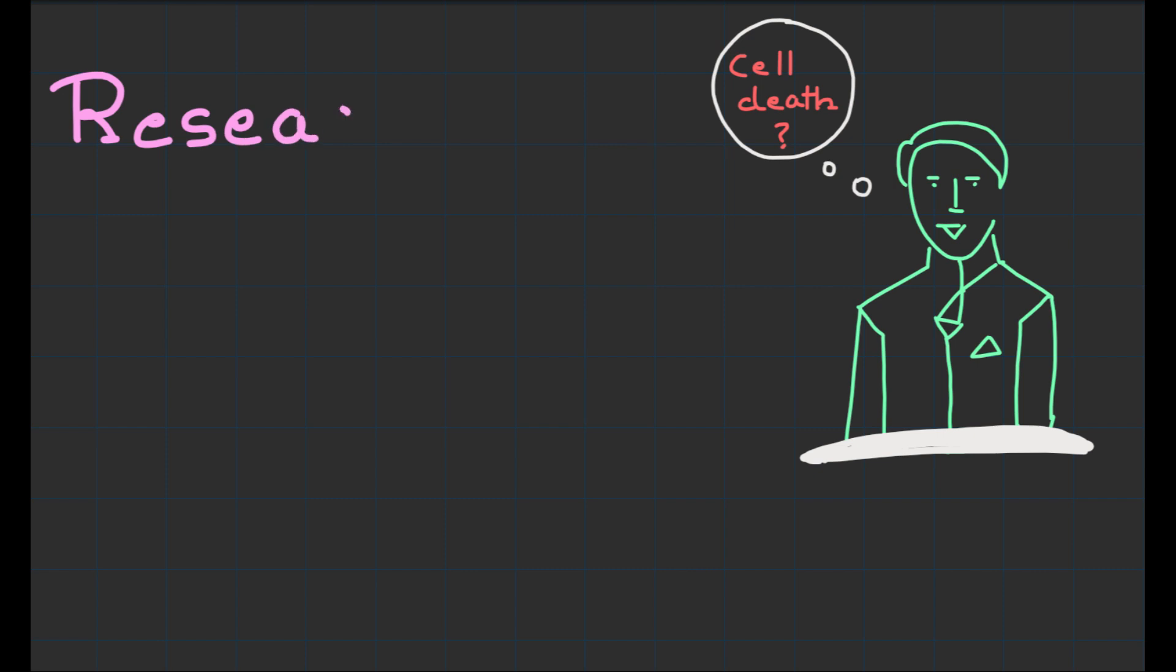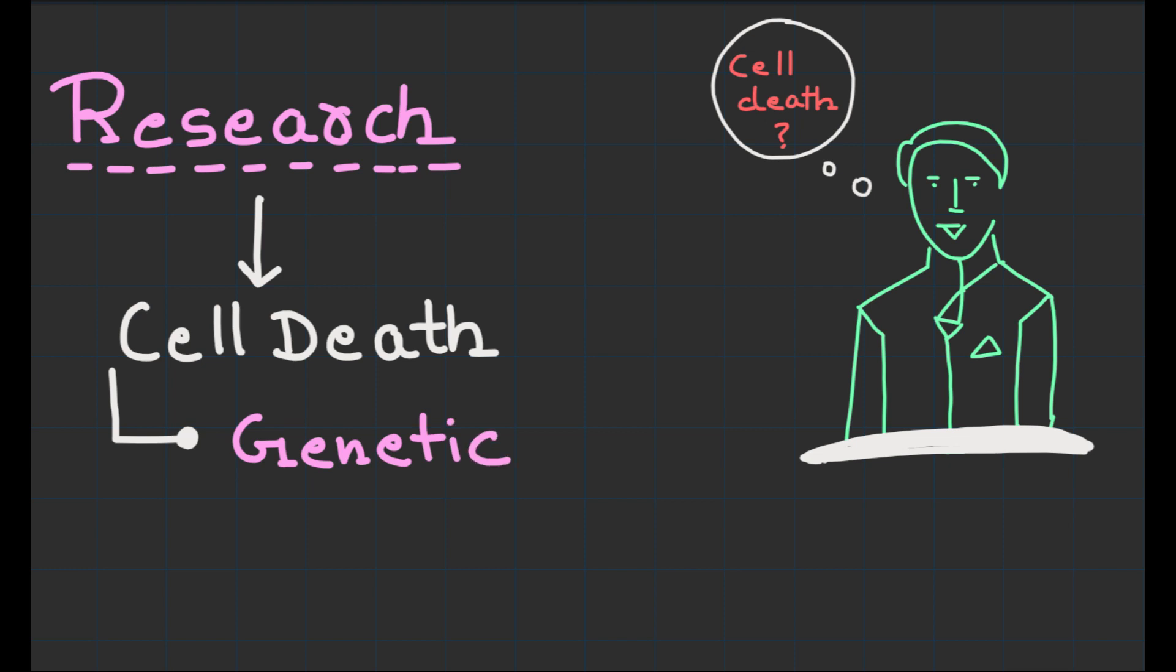Researchers around the world are conducting groundbreaking research to understand cell death better. They are investigating various factors that influence these processes, including genetic mutations, environmental stressors, and the interplay between different signaling pathways.